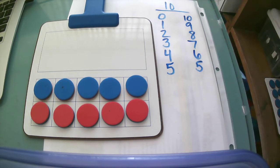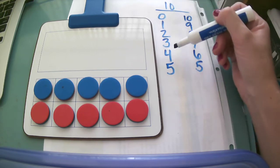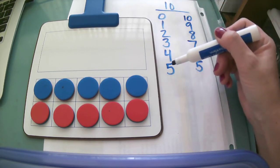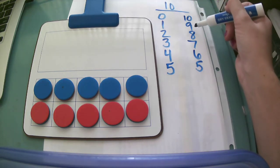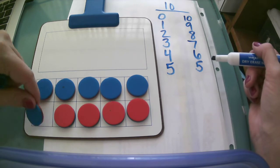So as you notice here on this column right here of numbers, it's getting bigger. My blues are getting bigger. On this side my numbers are getting smaller. My reds are getting smaller.